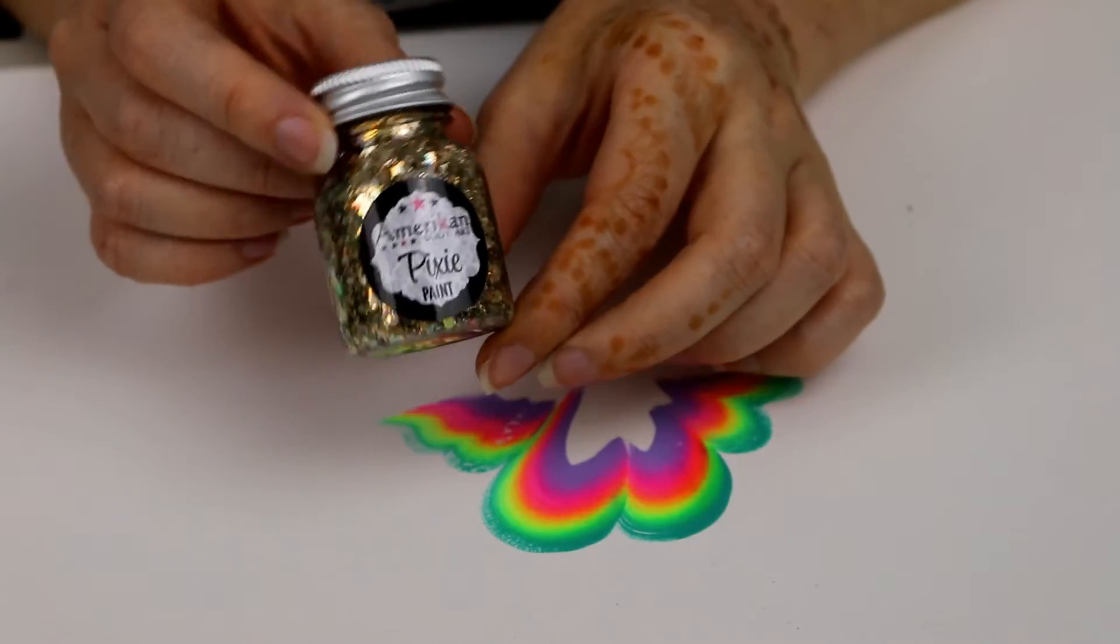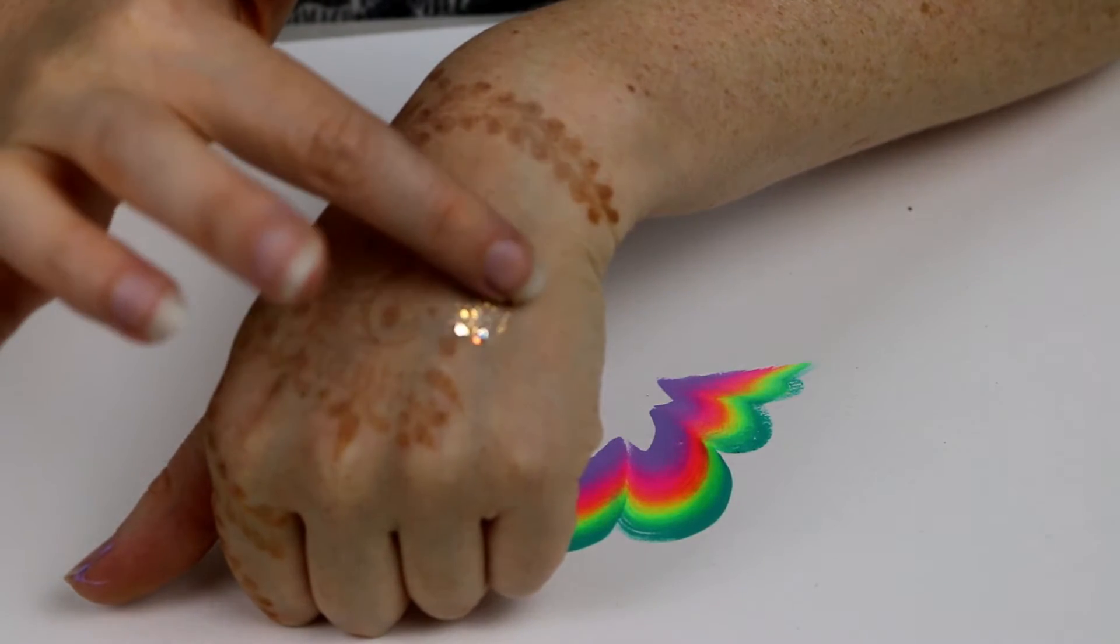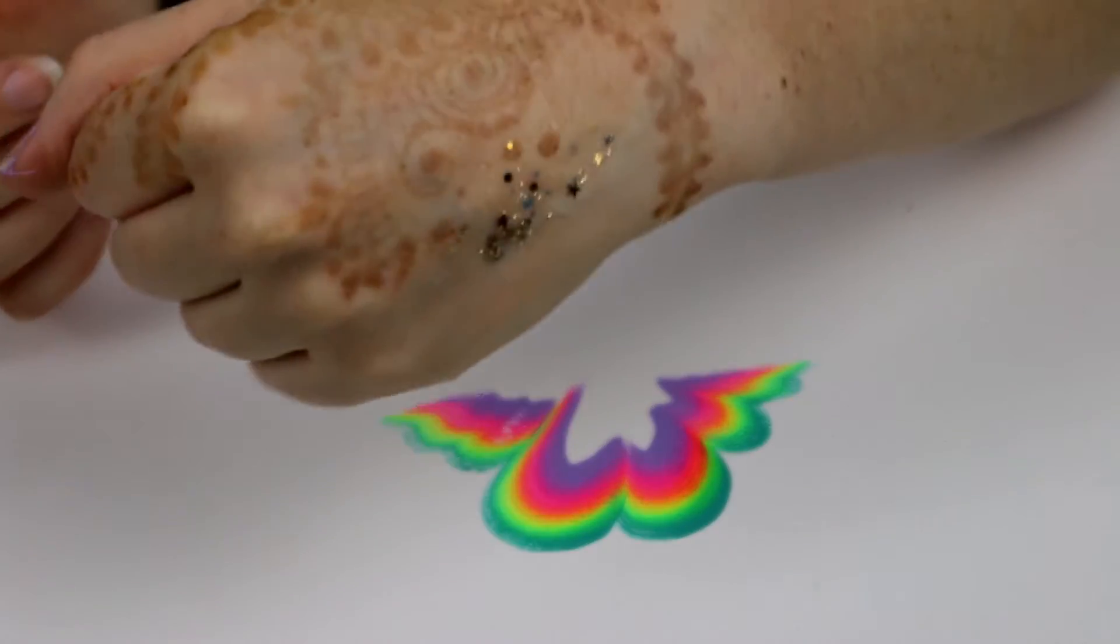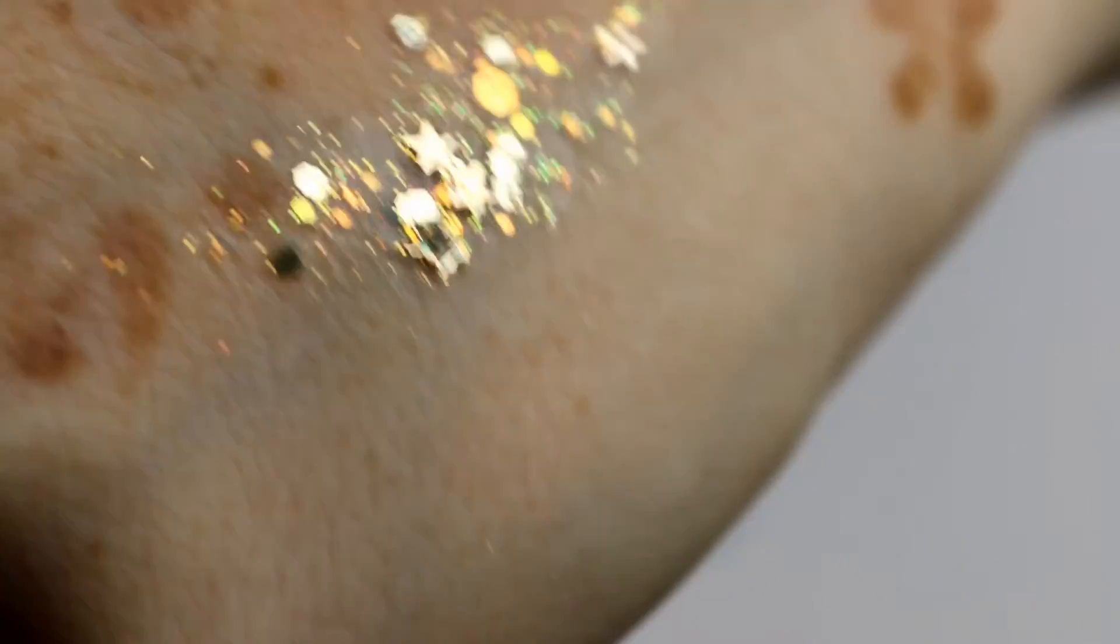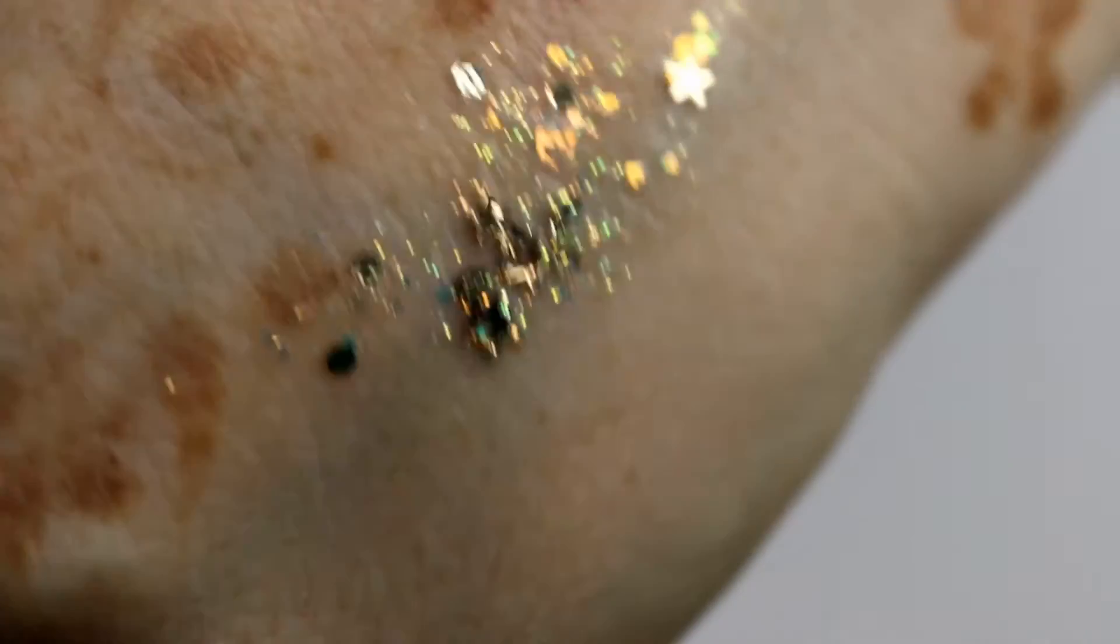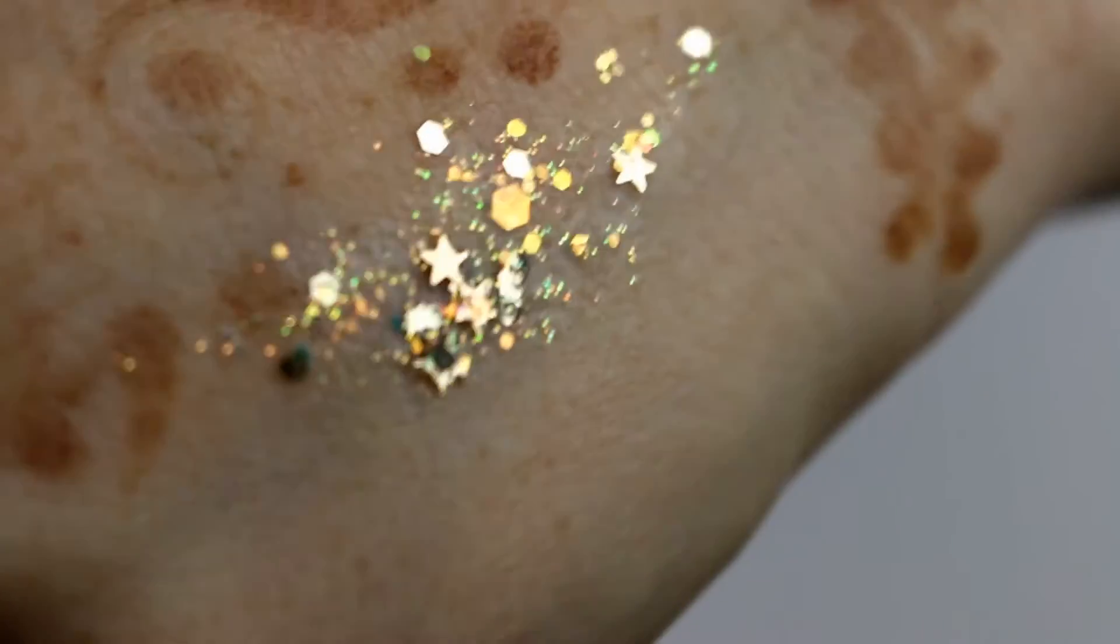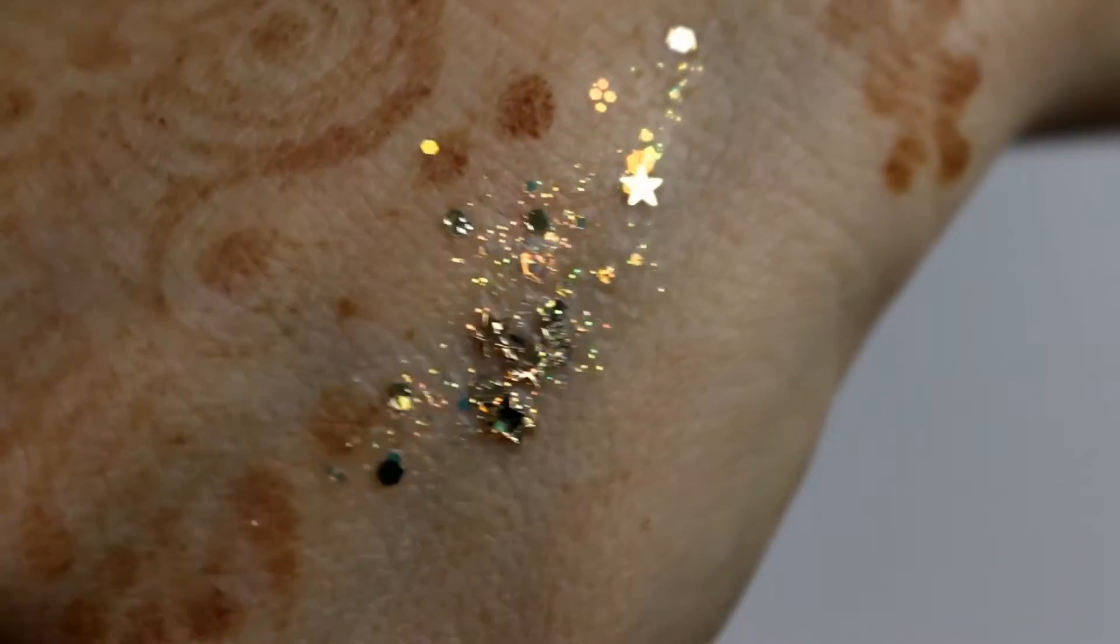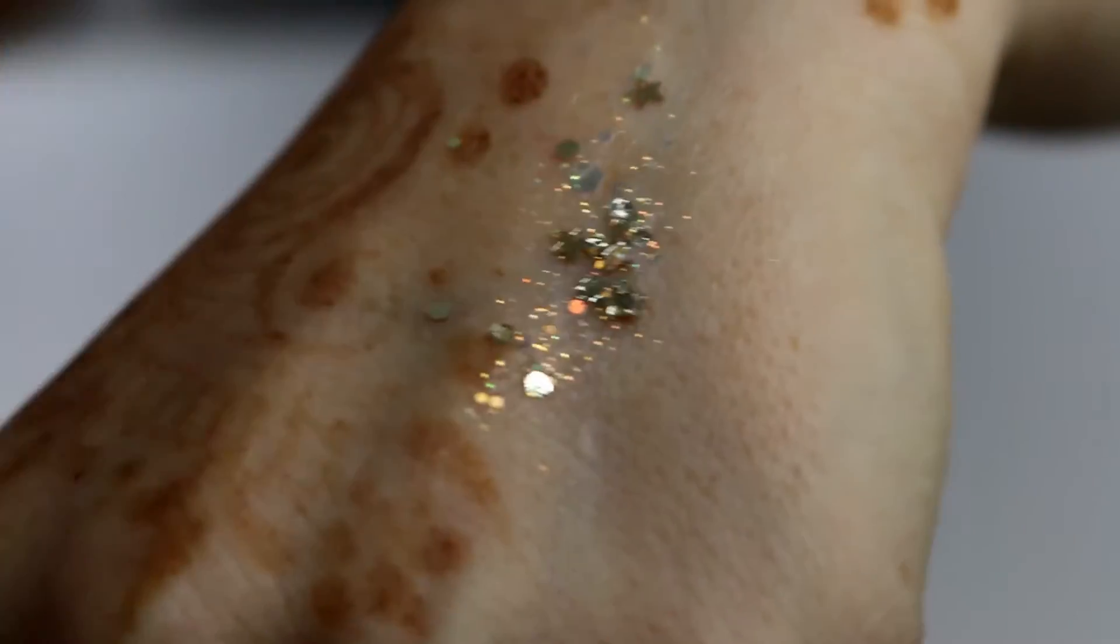I'll do a swatch of that on my hand. As you can see, there's like little pieces of sparkle in there. They're all different sizes. There's some stars and some little hexagons and some tiny little specks of glitter.